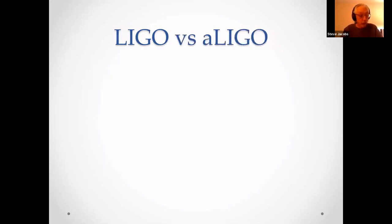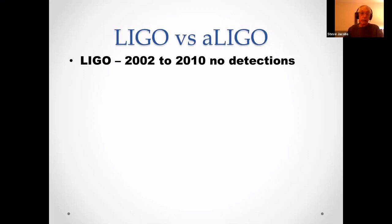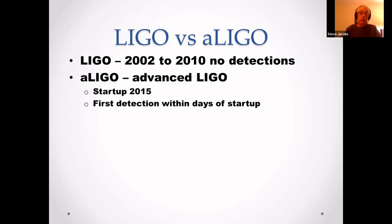LIGO versus advanced LIGO: LIGO ran from 2002 to 2010 with no detections of gravitational waves. Advanced LIGO started up in 2015, and within days it made its first detection of a gravitational wave.